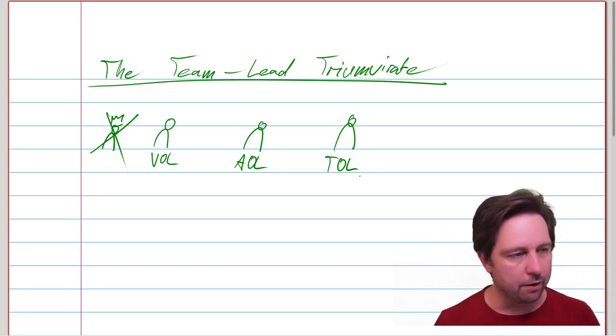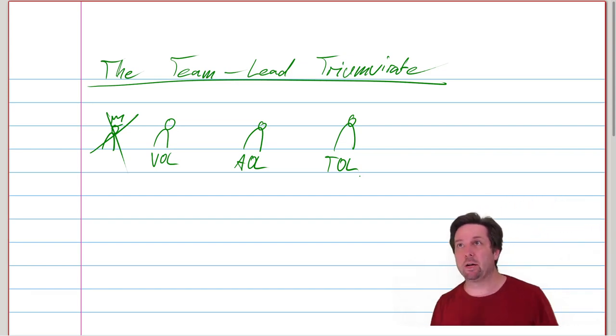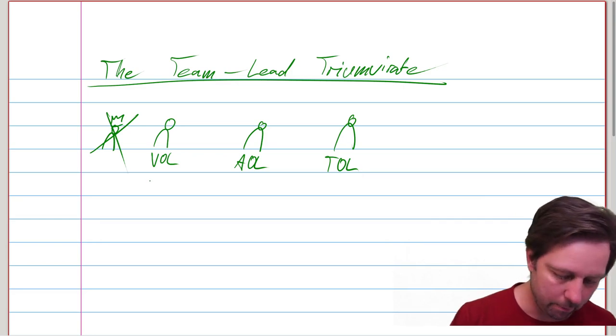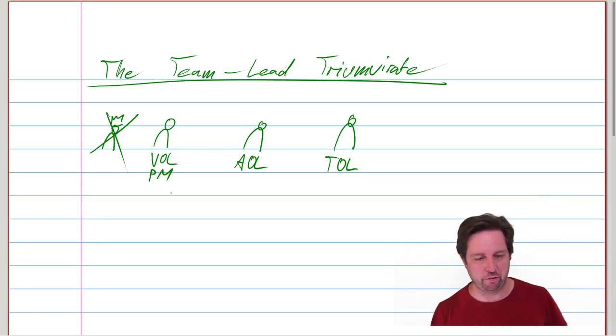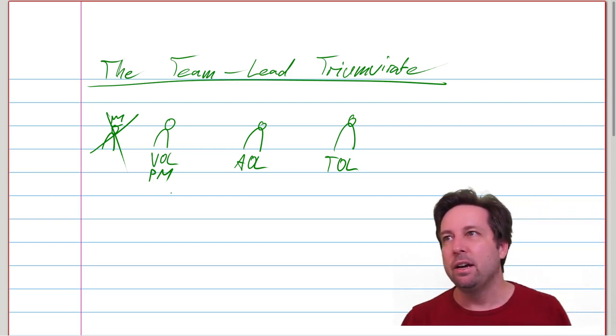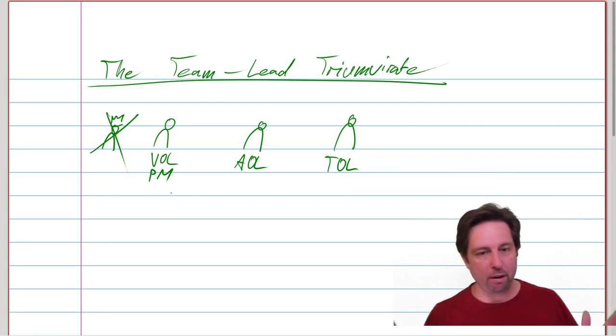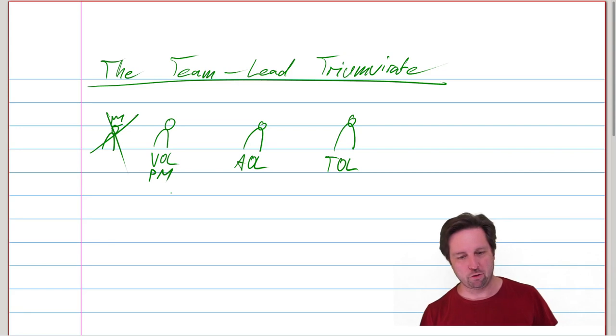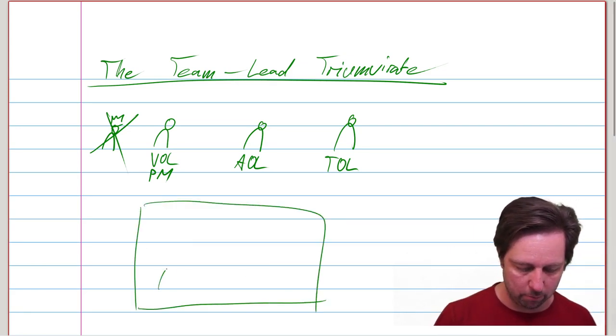You can call the value outcome lead a product manager, if you like. If you're into SAFE, for example, the scaled agile framework. So it doesn't really matter. But the point is, this structure has proven quite useful to have three roles with a different focus for a big team or team of teams.